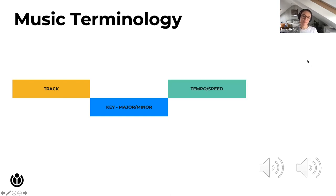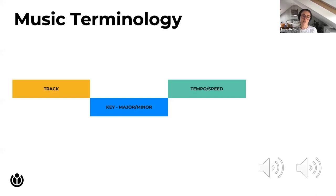Next up, tempo or speed. Tempo is the Italian word for time and simply means the pace or speed of a piece of music. In music we often measure this in beats per minute, or BPM, or more simply describe it as up-tempo or down-tempo. We now have two examples: the first is up-tempo and the second is slower and down-tempo.